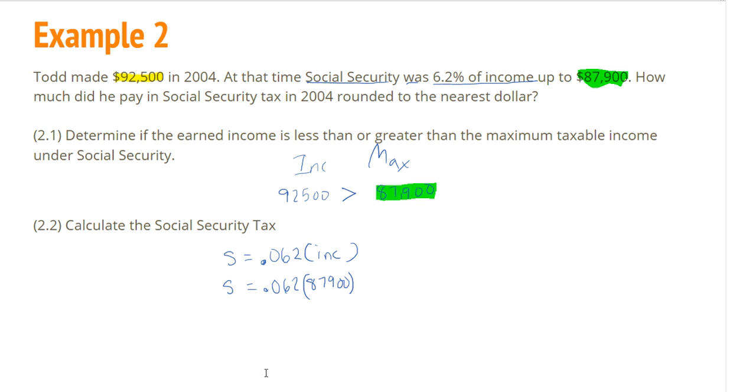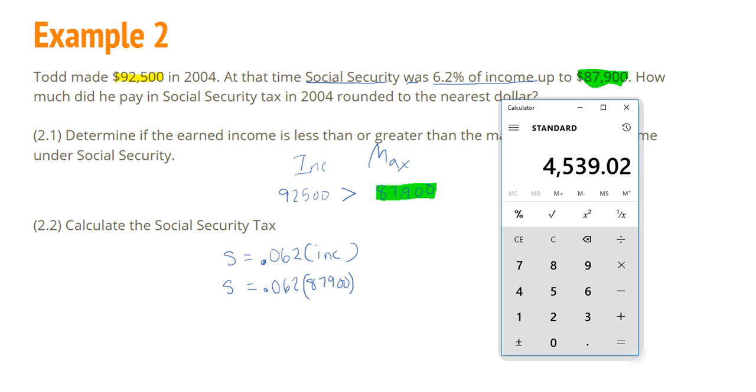So now we're just going to straight up multiply. I'm going to take $87,900 times 0.062. And I get $5,449.80.